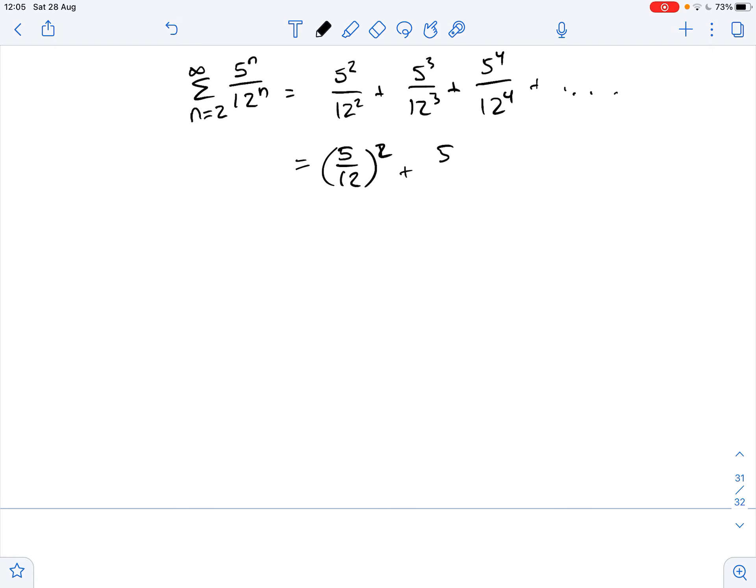Then we can rewrite it as 5 over 12 squared plus 5 over 12 cubed plus 5 over 12 to the fourth power and so on.